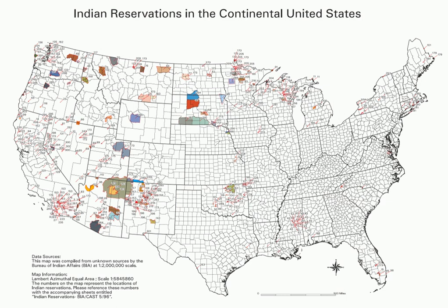Most of the tribal land base in the United States was set aside by the federal government as Native American reservations. In California, about half of its reservations are called rancherias. In New Mexico, most reservations are called pueblos. In some western states, notably Nevada, there are Native American areas called Indian colonies.